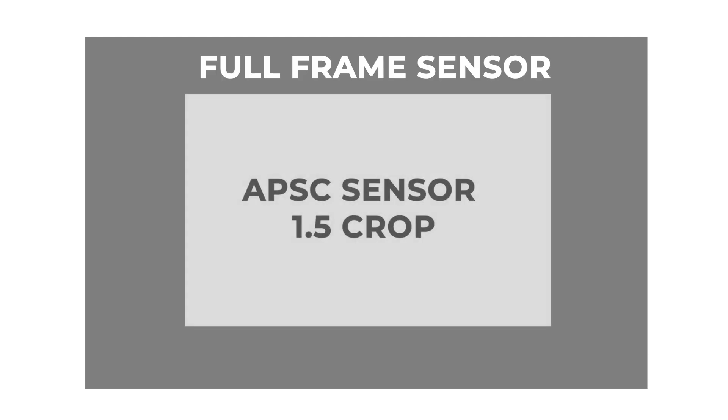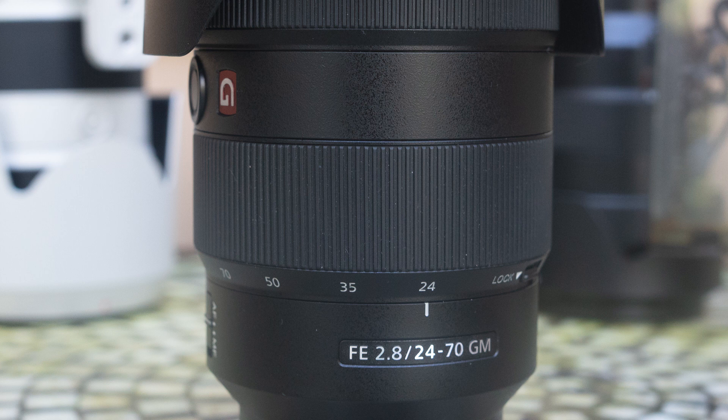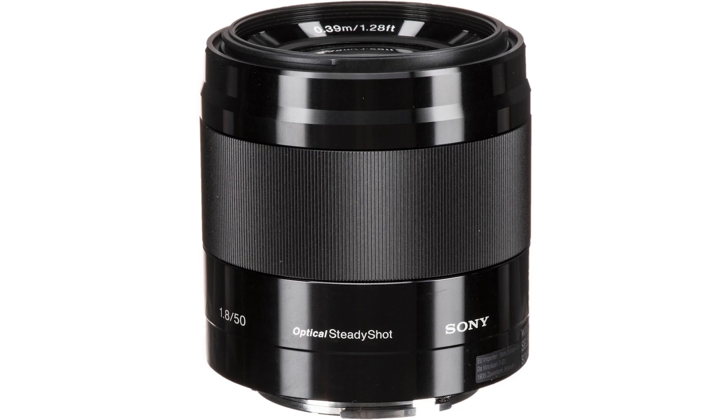The crop factor for Sony APS-C is 1.5. It's based on multiplying a full frame sensor — a 50mm will turn into a 75mm. The difference between a Sony APS-C lens and Sony full frame lenses: Sony APS-C has an E on it, and FE stands for full frame lenses. Full frame lenses will work on APS-C cameras. You still have to apply the crop factor regardless of whether you're using a 50mm FE version or the Sony E-mount 50mm.